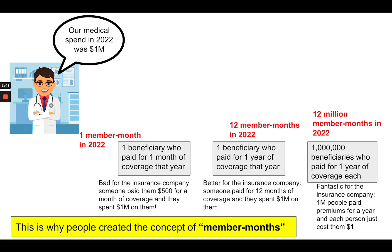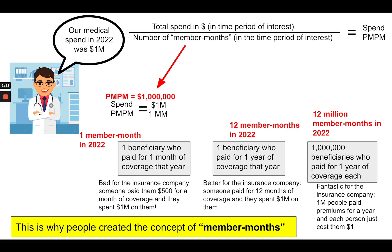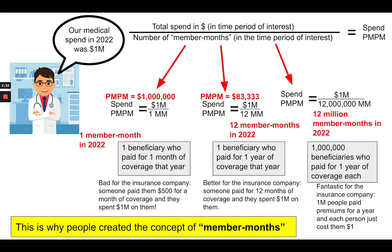When you say 'our medical spend in 2022 was a million dollars,' the normalized way to report it is: take the total spend in dollars in the time period of interest and divide by the number of member months in that period. That gives you a number called spend per member per month — or spend PMPM. Where there was one member with eligibility for one month, you get a PMPM of $1 million. Where you have $1 million divided by 12 member months, you get about $83K PMPM. And where you had $1 million across 12 million member months, the PMPM is $0.08.